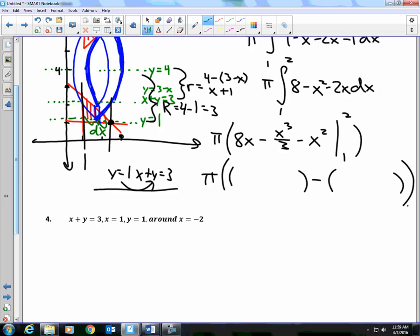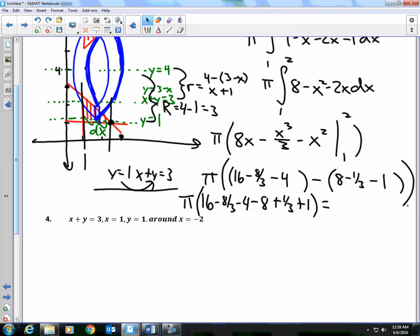Plug in 2, then I have to plug in 1. 16 minus 8 thirds minus 4. Again, 1, I get 8 minus 1 3rd minus 1. So 16 minus 8 3rd minus 4 minus 8 plus 1 3rd plus 1. Let's combine some like terms here. 16 minus 4 is 12 minus 8 is 4 plus 1 is 5. Negative 8 3rd and positive 1 3rd make negative 7 3rds. So you have 15 3rds minus 7 3rds, 8 pi over 3.